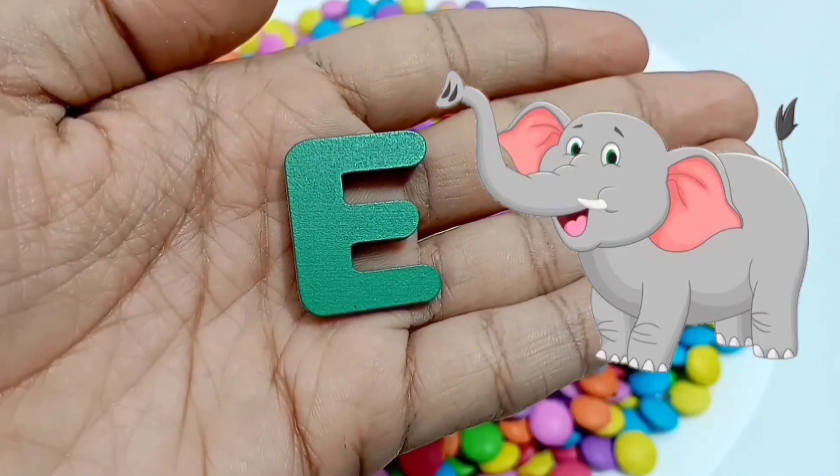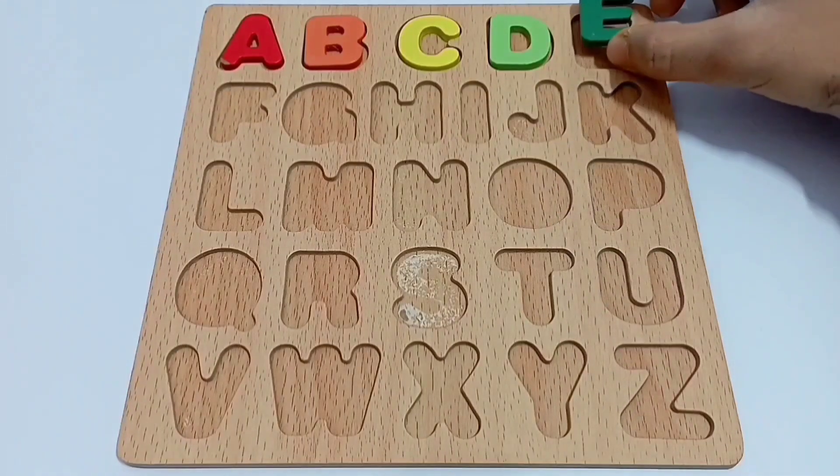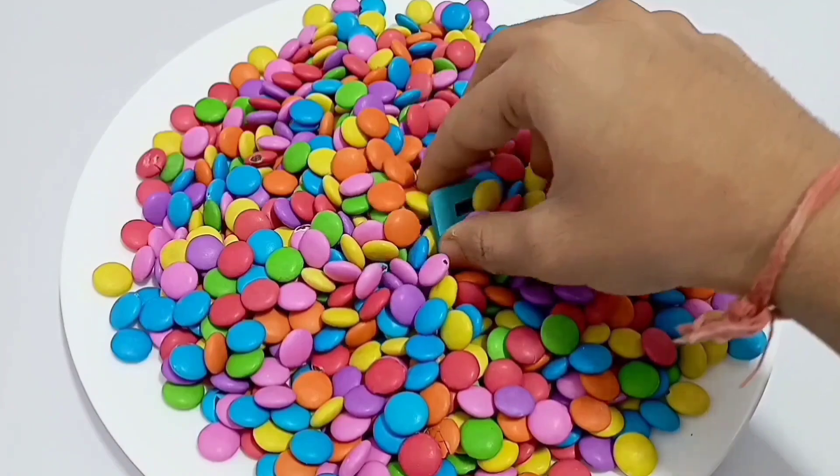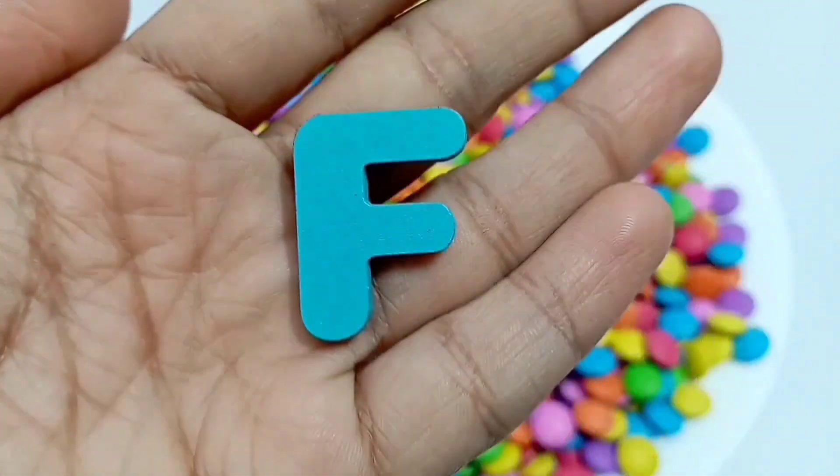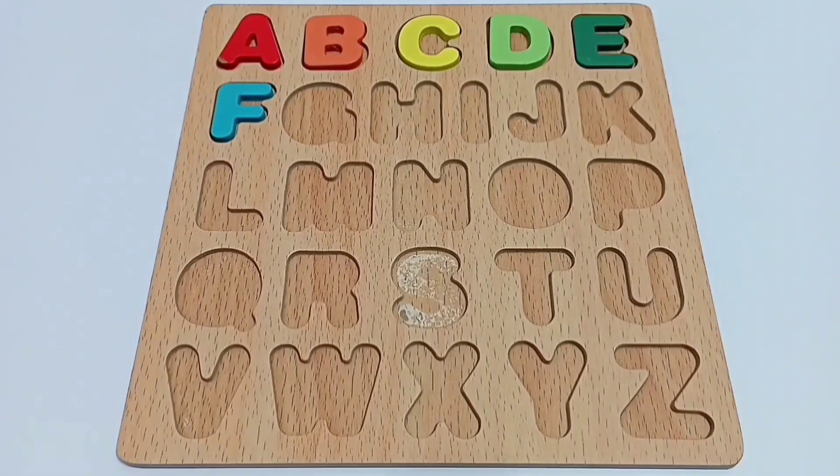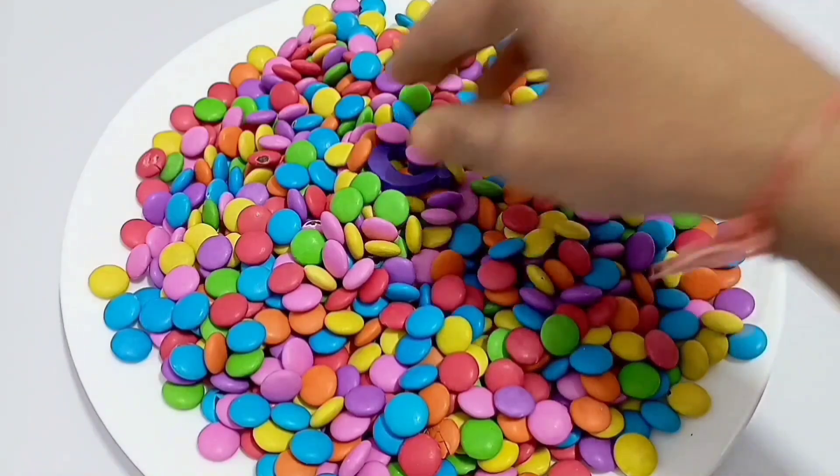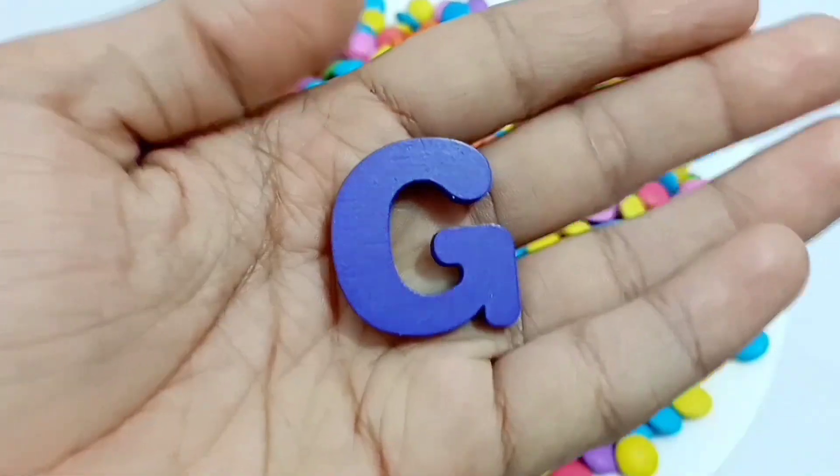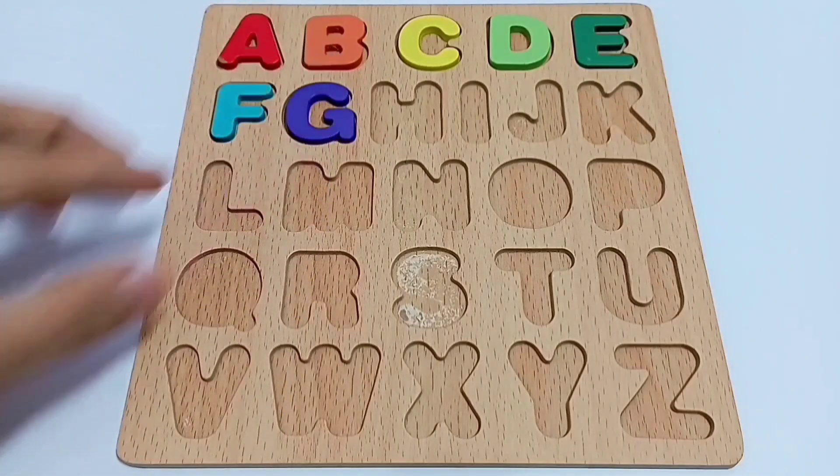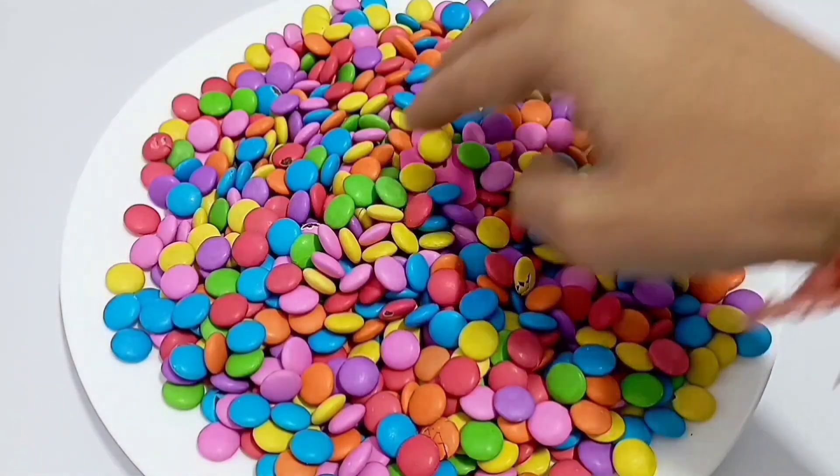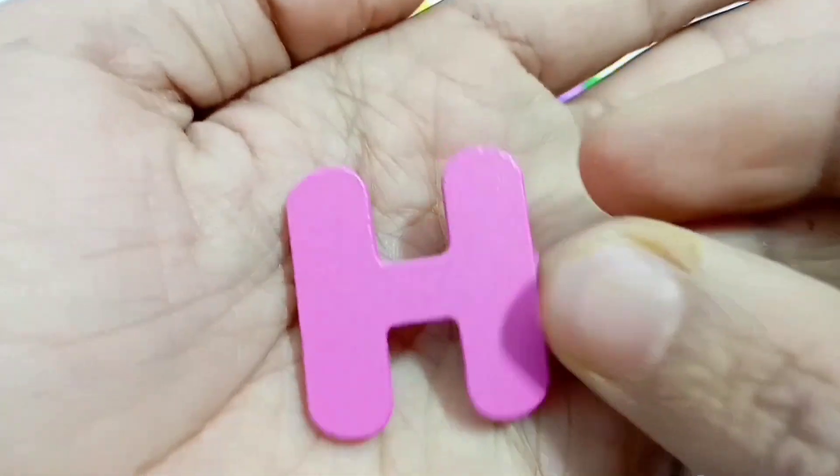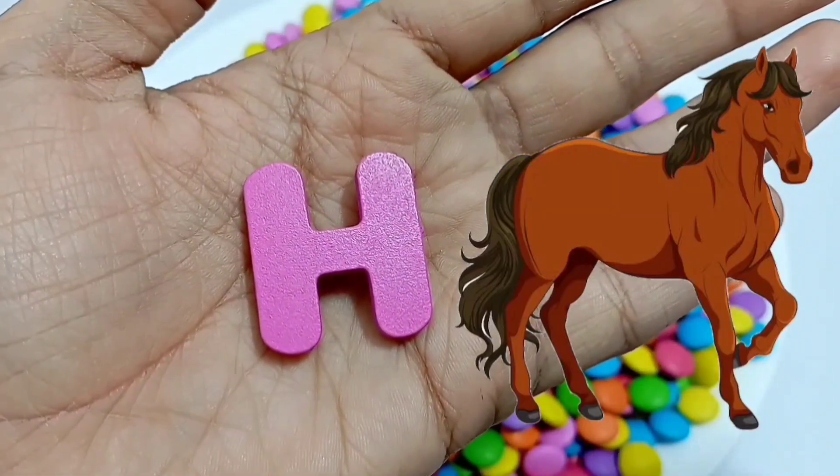E for elephant. F for fish. G for grep. H for horse.